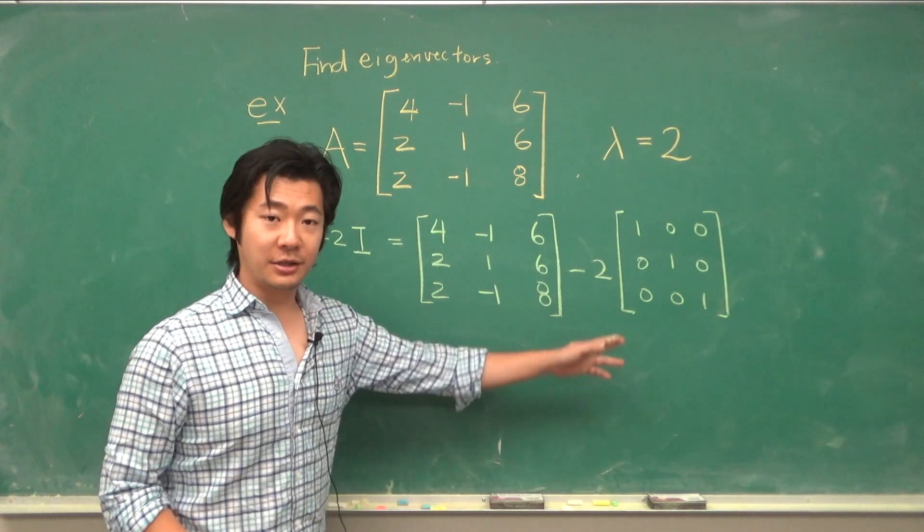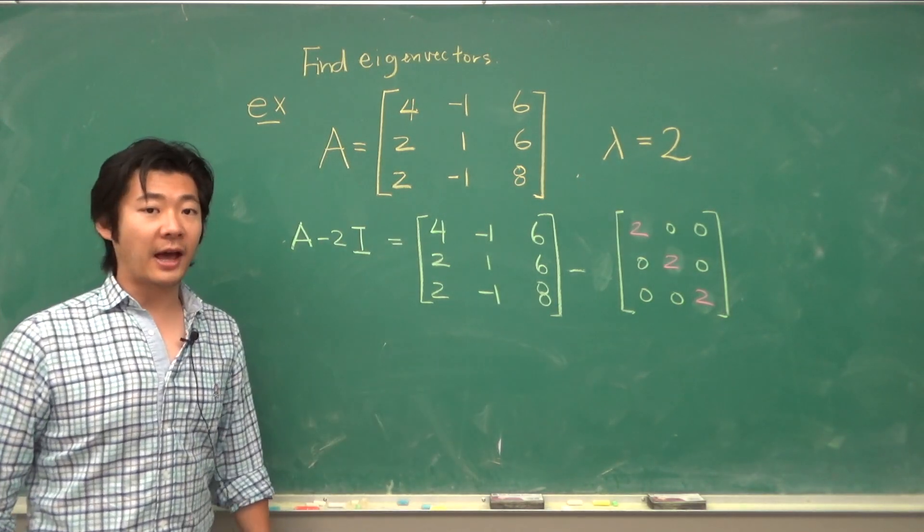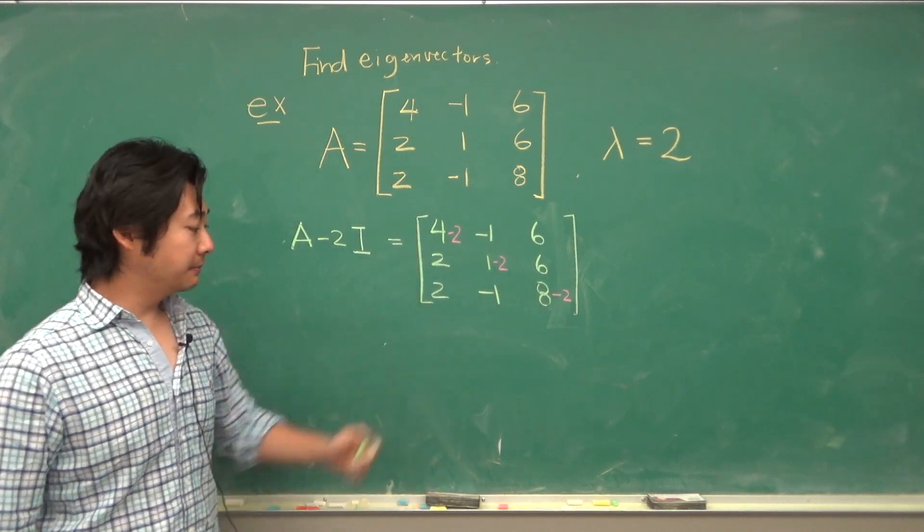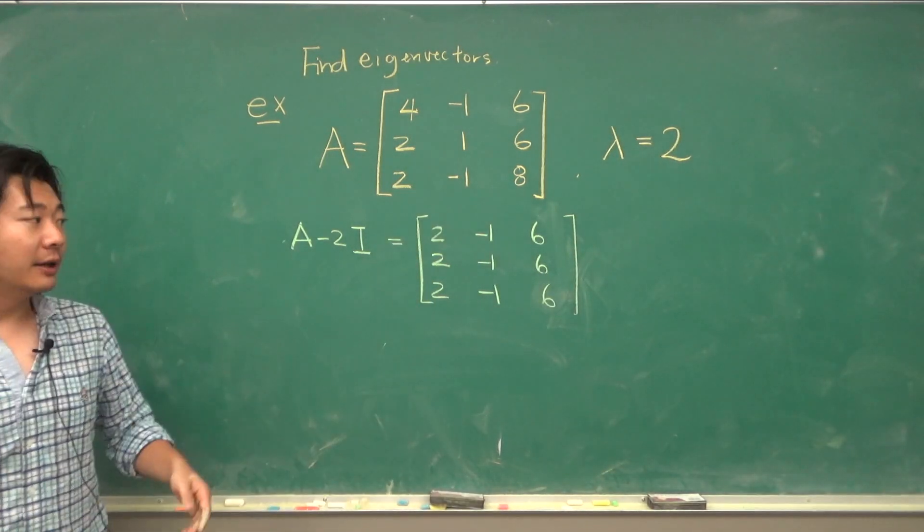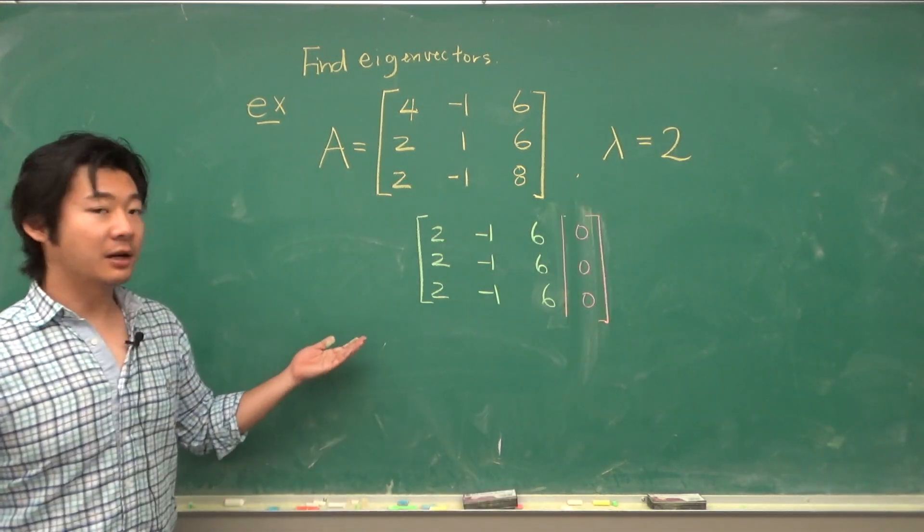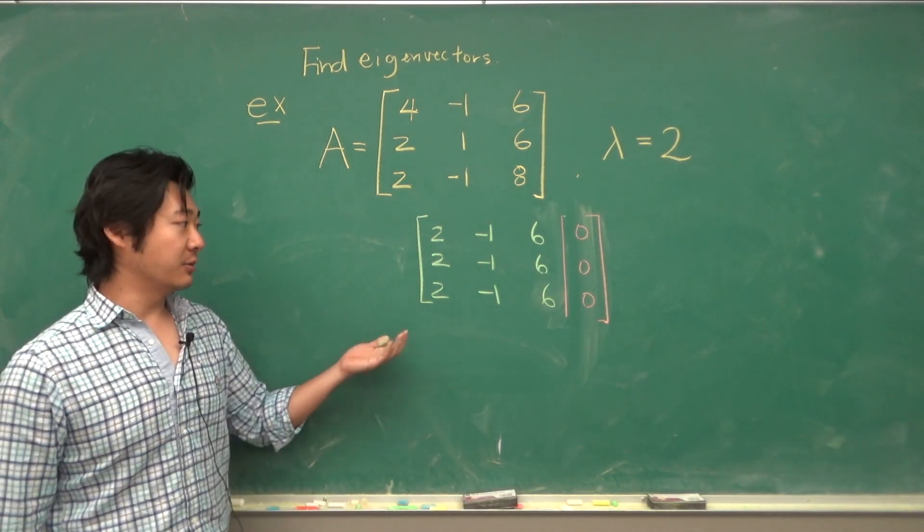So if we multiply in the 2, we get 2s on the diagonal. So we'll subtract 2 from the diagonals of A. So that's A minus 2I is this matrix. And now we want to solve for a homogeneous system. So the augmented matrix for such a system would look like this.